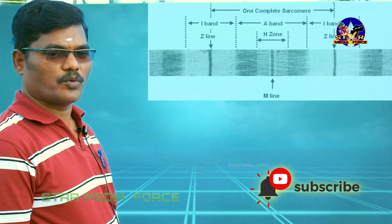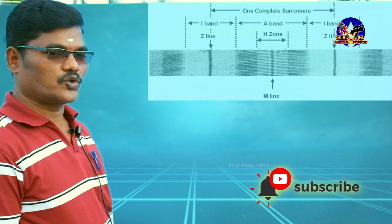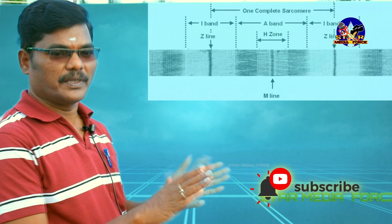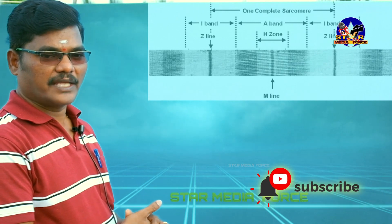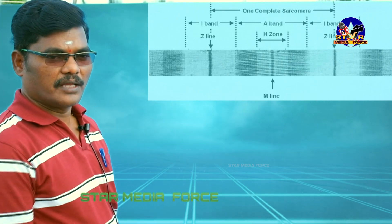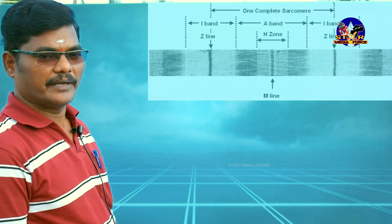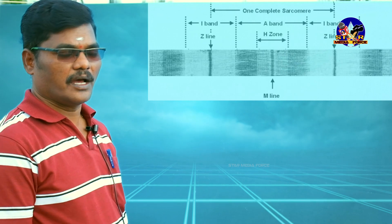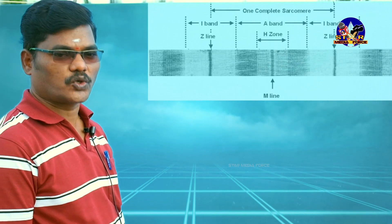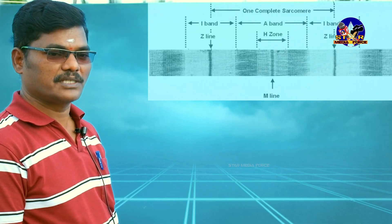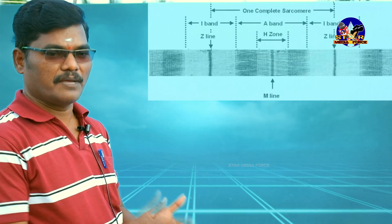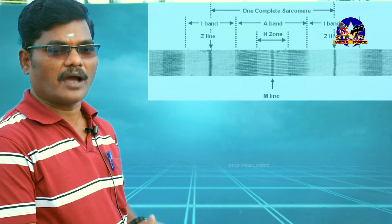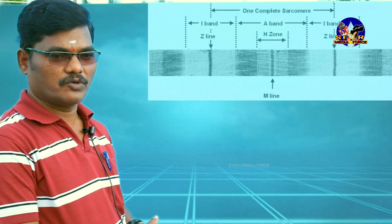The dark band is called the A band — anisotropic band. Anisotropic means different material makes up that band. The light band is otherwise called the I band — isotropic band. Isotropic means the same material makes up that area. Keep it in mind: dark band = A band, light band = I band.